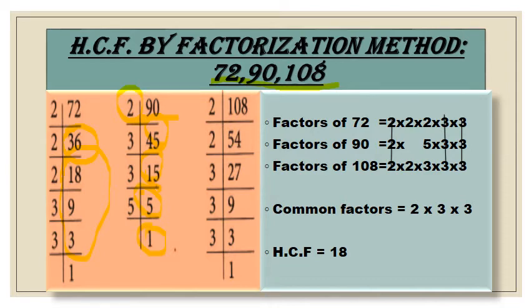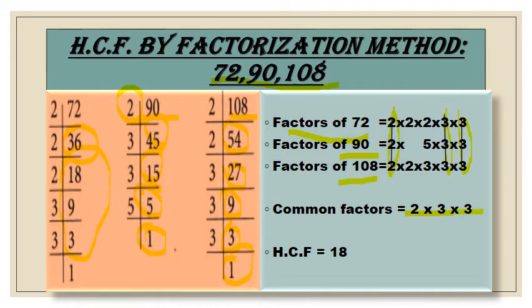The last number is 108. It is divisible by 2: 2 × 54 = 108, then 2 × 27, then 3 × 9, then 3 × 3, and then 3 × 1. In the second step, write down all the factors of 72, 90, and 108. In the third step, make loops around the common factors. The common factors are 2, 3, and 3, so 2 × 3 × 3 = 18. Therefore HCF of 72, 90, and 108 is 18.